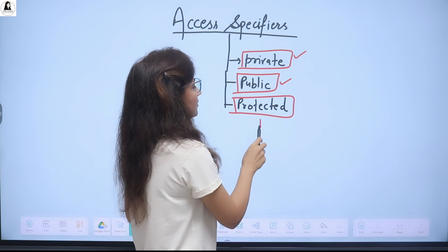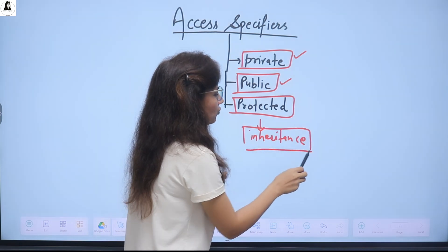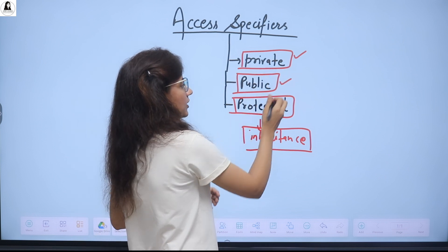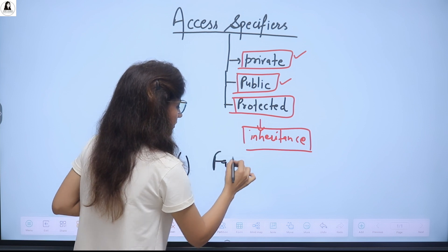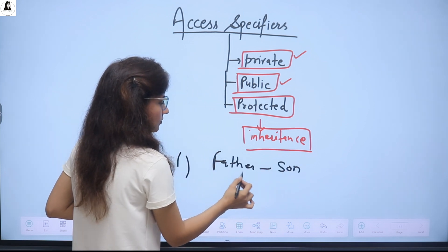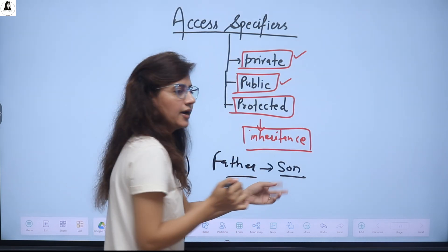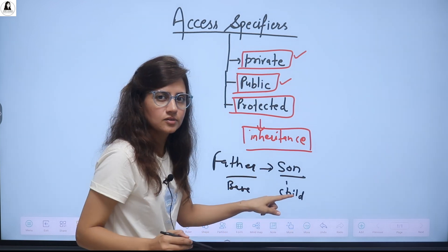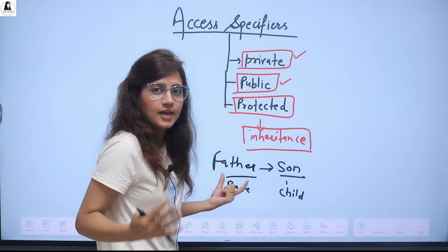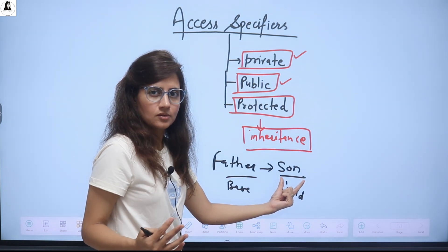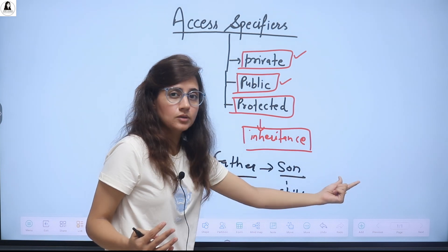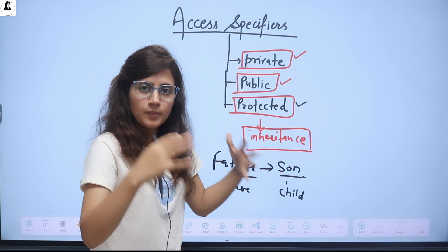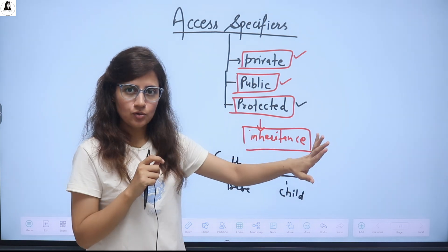The third one is protected, and it is used in inheritance. Let me briefly explain: inheritance is like a father and son relationship, where properties can be inherited by the child. So there is a base class or parent class, and a child class or derived class. The protected member of the base class can be accessed by the derived class, but not further — only by the child class. This access specifier is mainly used in inheritance, and we will see it in detail in later videos.